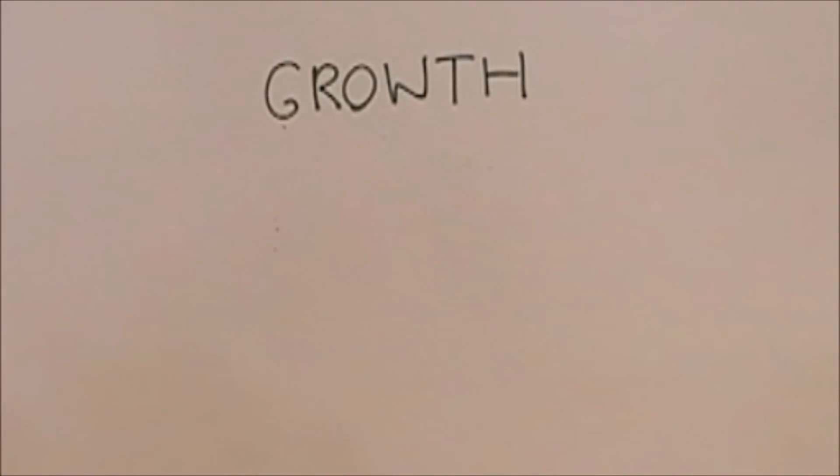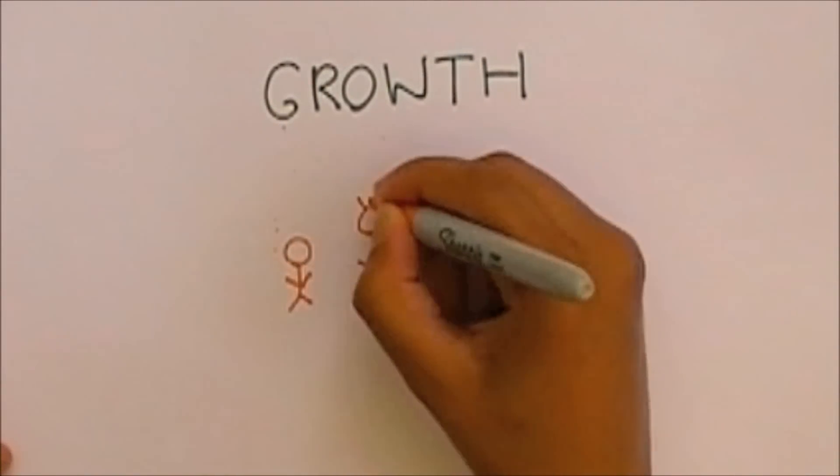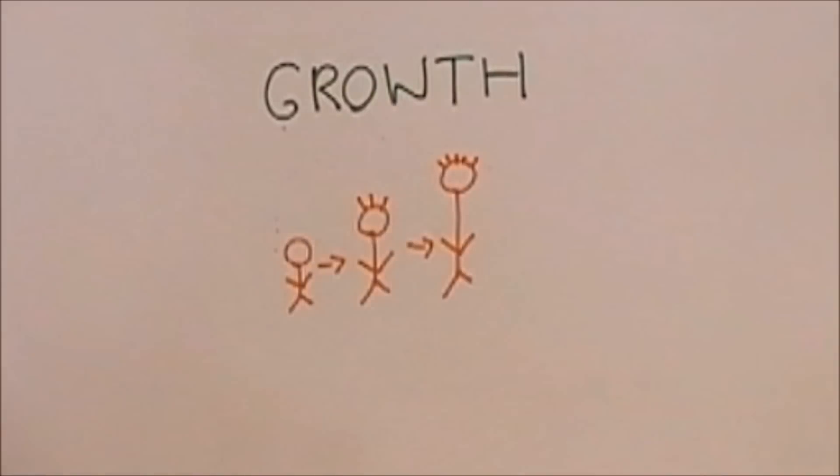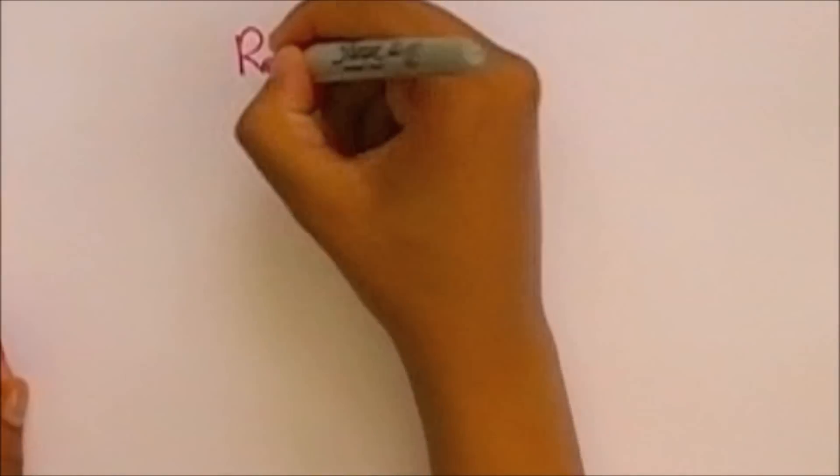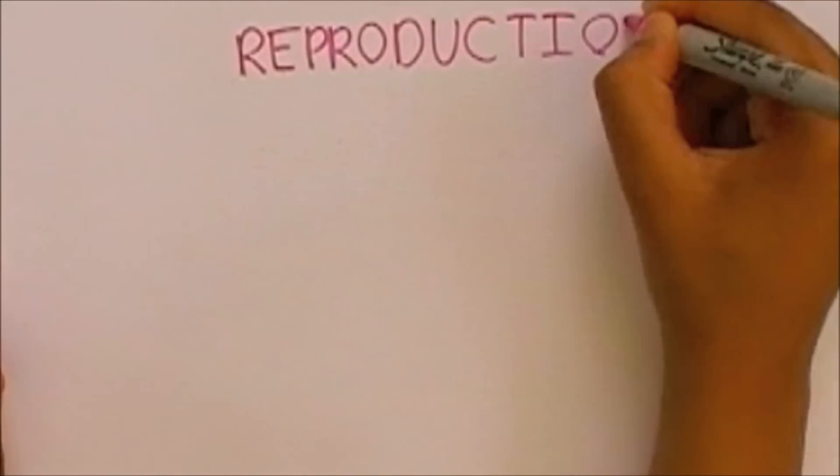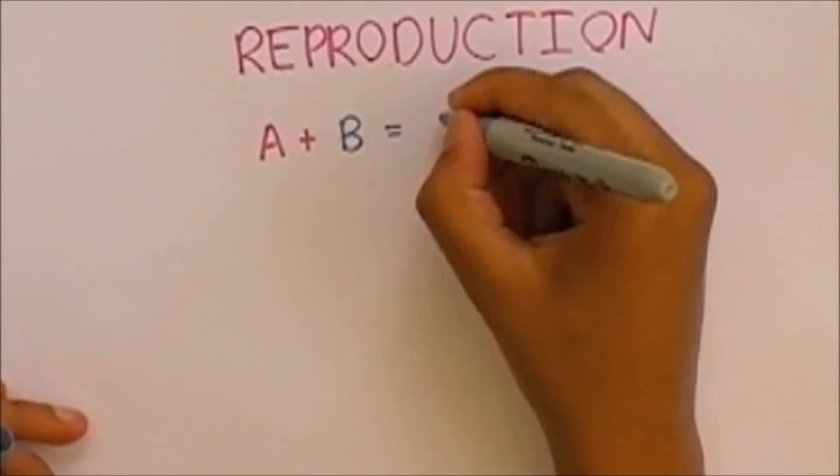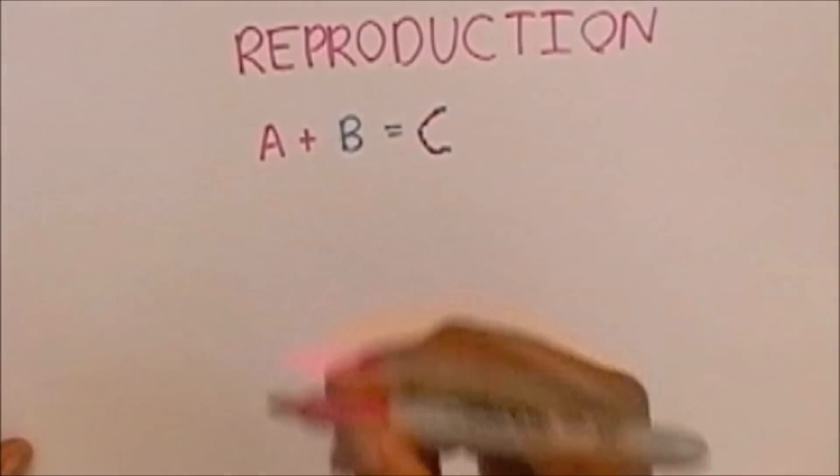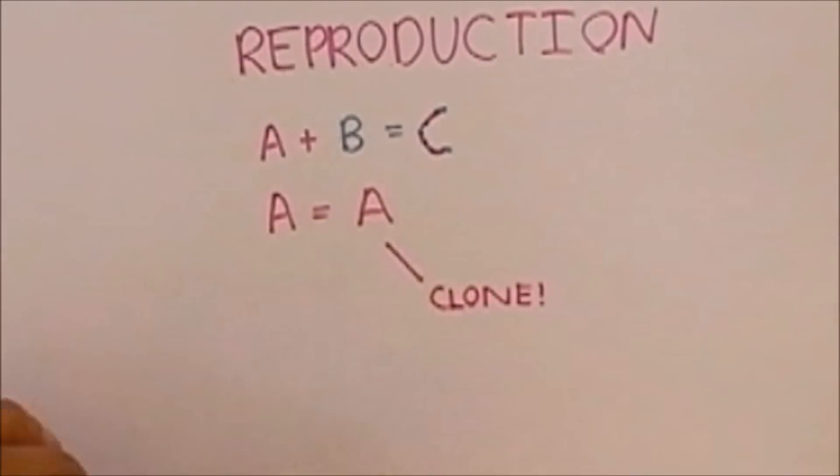Growth is a permanent increase in size and mass. Growth can also be the increase in complexity as an organism develops. Reproduction is the production of offspring and can involve either two parents with genetically different offspring or one parent with genetically identical offspring.